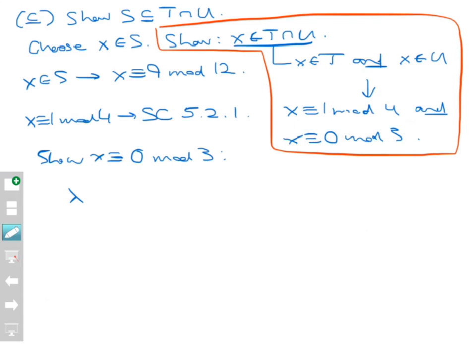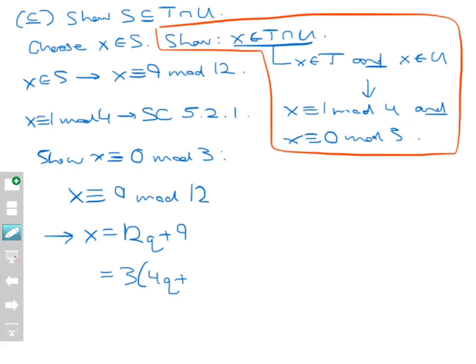Now let's show that X is congruent to 0 mod 3. X is congruent to 9 mod 12, which means X equals 12Q plus 9 for some integer Q. What I want to show is that X is congruent to 0 mod 3, meaning it's a multiple of 3. If I factor a 3 out, I get X equals 3 times (4Q plus 3), and that automatically shows that X is congruent to 0 mod 3.